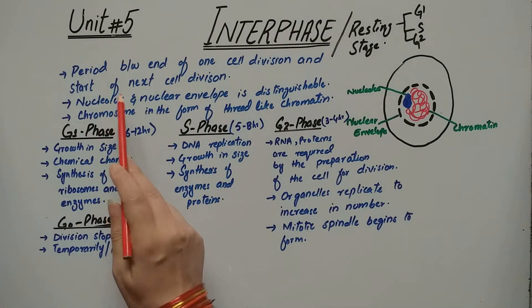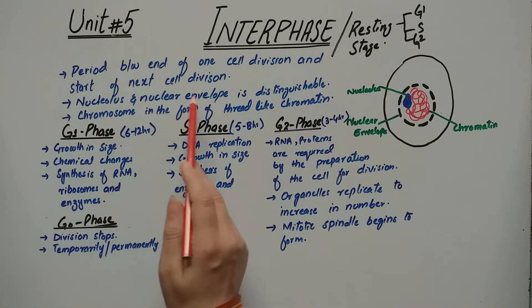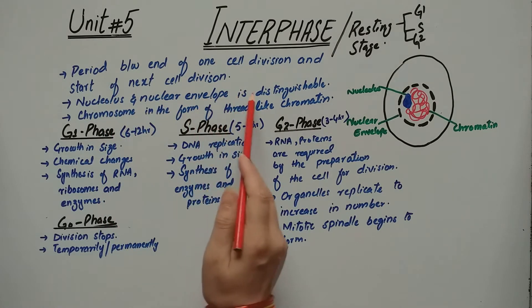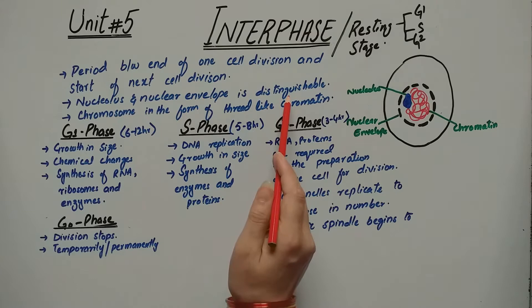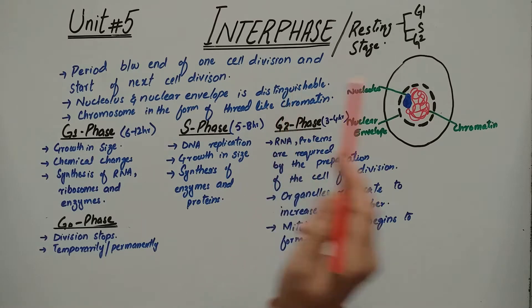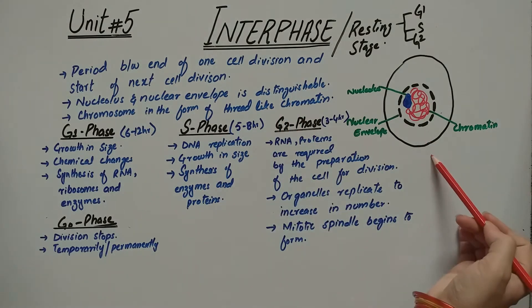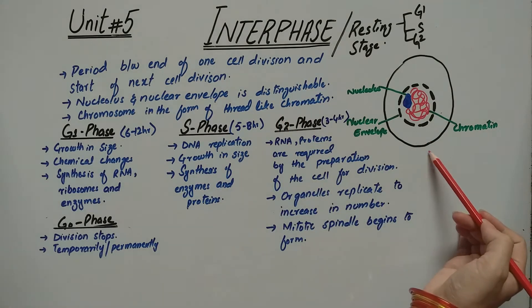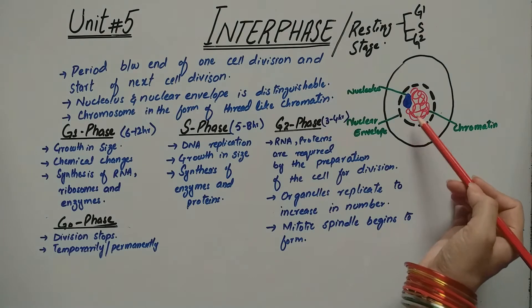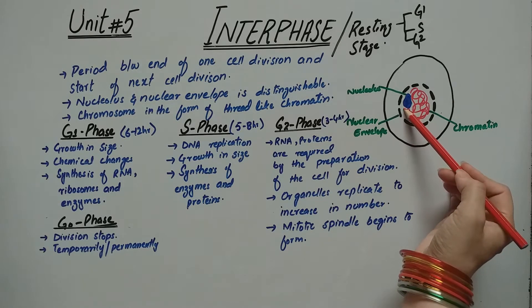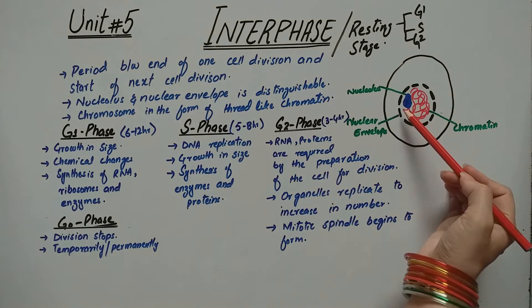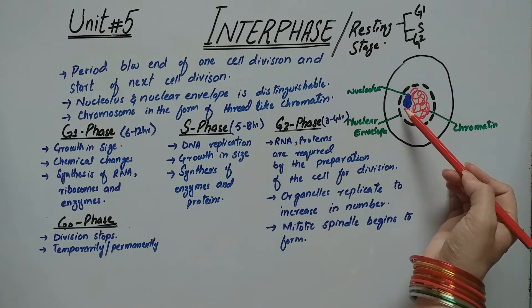During interphase, the nucleolus and nuclear envelope are distinguishable. Have a look at the diagram — in the diagram you can see that the nuclear envelope and nucleolus are very prominently visible at the interphase stage.